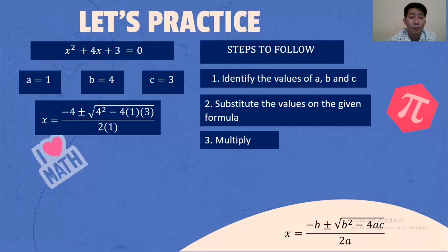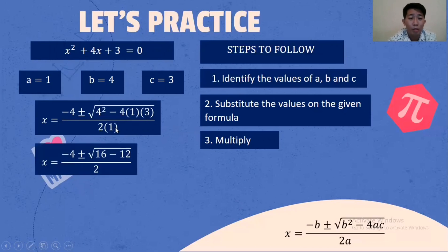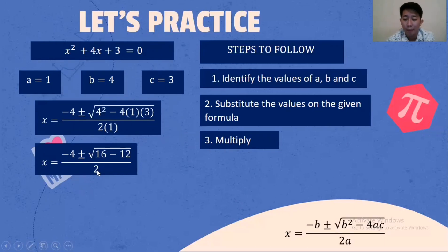Third step, we multiply. That is 4 times 4, then 4 times 1 times 3, then 2 times 1. What is 4 times 4? That is 16. 4 times 1 is 4, times 3 gives us 12. 2 times 1 is 2. That is the third step — multiply.